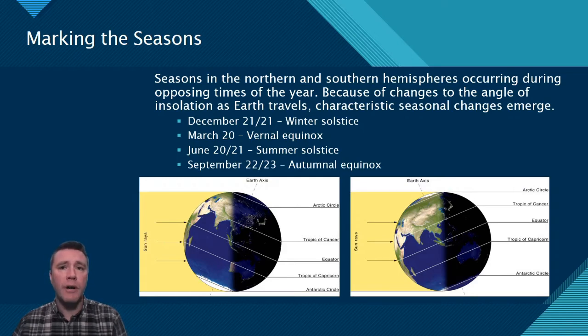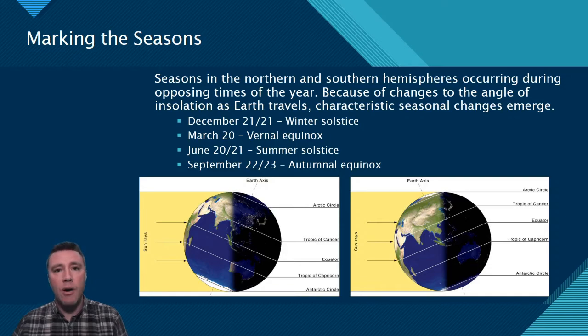Year after year, the sun's position in the sky appears to move in a zigzag pattern, moving north from December to June and south from June to December.